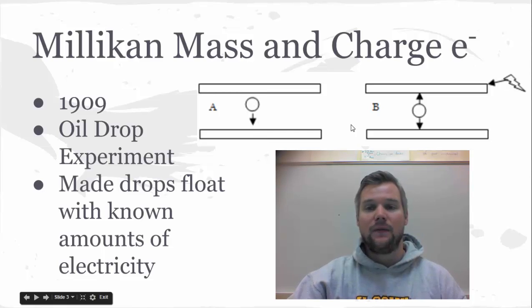Gravity is going to pull these down, but if he put a charge on these plates, he could actually make them float, and he was able to do some math based on how much electricity he was running through his oil drop experiment and the size of his oil drops in order to figure out the size and charge of those electrons. So he's pretty smart in how he did all that.